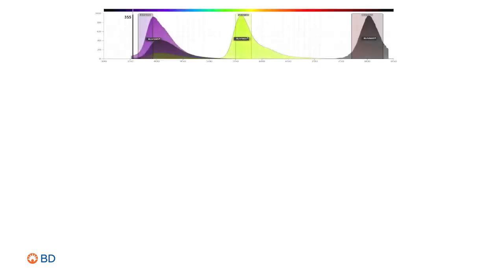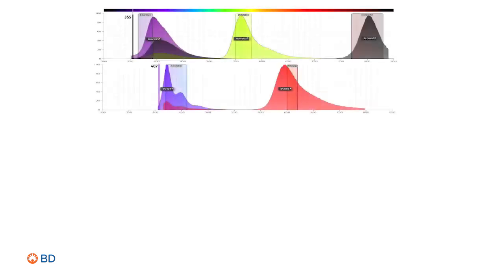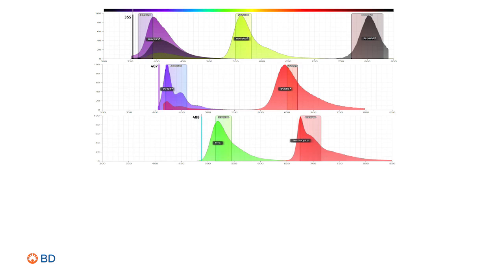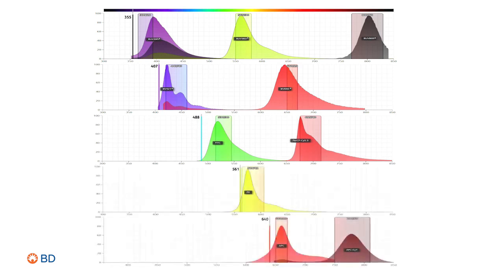Compare that to the same number of fluorochromes on a five laser analyzer. Note that here there is much less spectral overlap among the 10 fluorochromes, which is an important concept in good panel design.